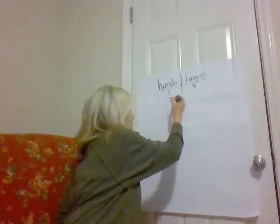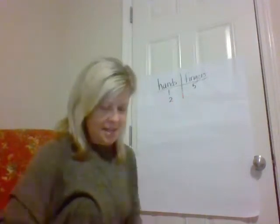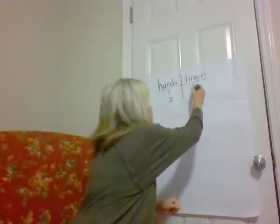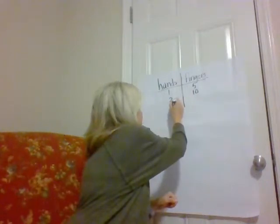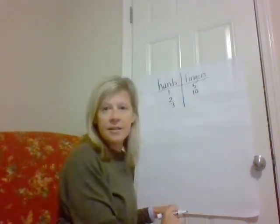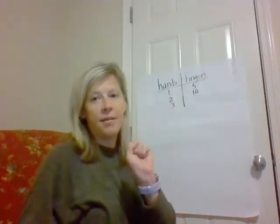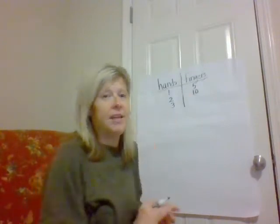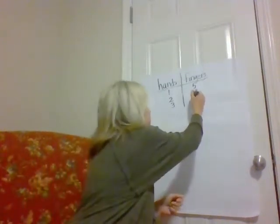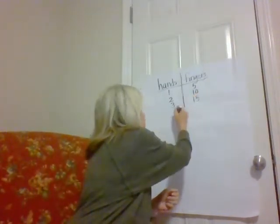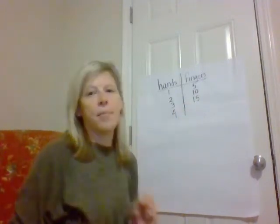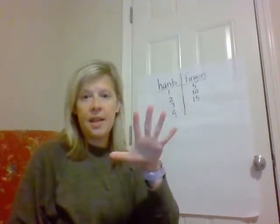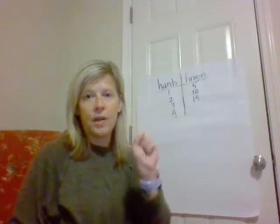What about if we have two hands? How many fingers? Ten. Let's keep going. If I had three hands, I would have five, 10, 15 fingers. What about if I had four hands? Let's count by fives: five, 10, 15, 20.